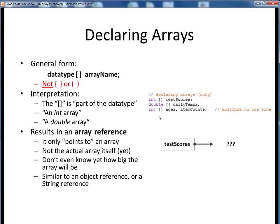And on this last line, ages is an int array, and so is item counts, because it's okay to declare multiple arrays on the same line, just like for any type of simple variable declarations. When we declare this first int array test scores, what we wind up with at this point is simply an array reference, as shown down here. This is nothing but a pointer to some unknown place in memory that hasn't been established yet. We don't know where the array will be stored or how big it will be yet.